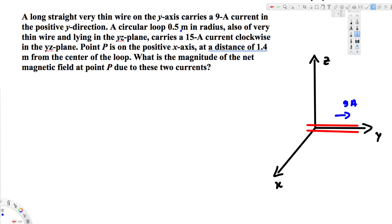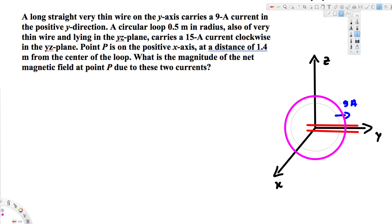A circular loop of 0.5 meter radius, also very thin wire, lies on the yz plane. So in this plane we have a circular loop — let's draw the loop. The radius of this loop is 0.5 meter from the center to the edge. This loop carries 15 ampere current clockwise.